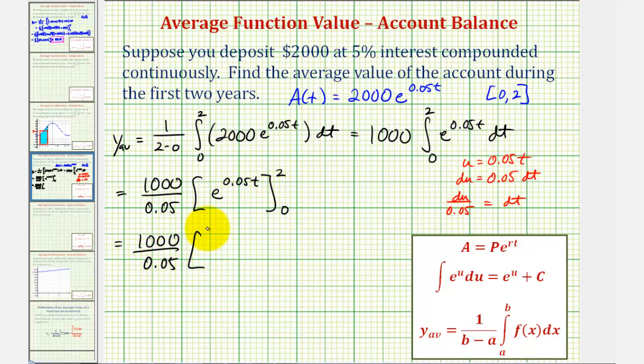Well, when t is 2, we'd have e to the power of 0.05 times 2 would be 0.1. Minus when t is 0, we'd just have e to the 0, which would be 1.